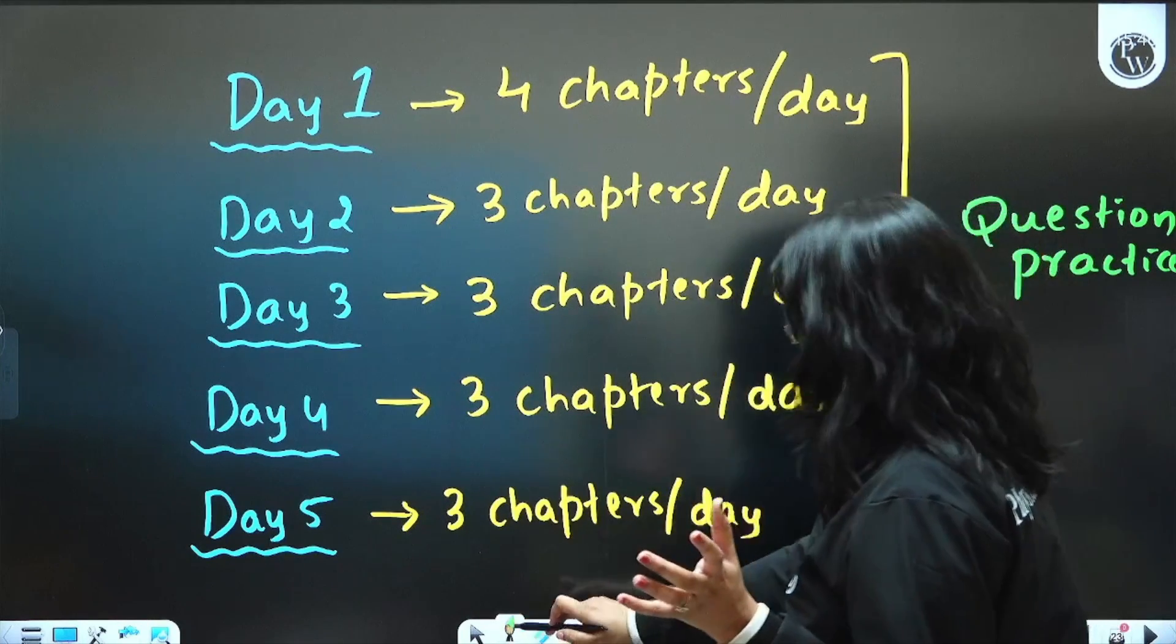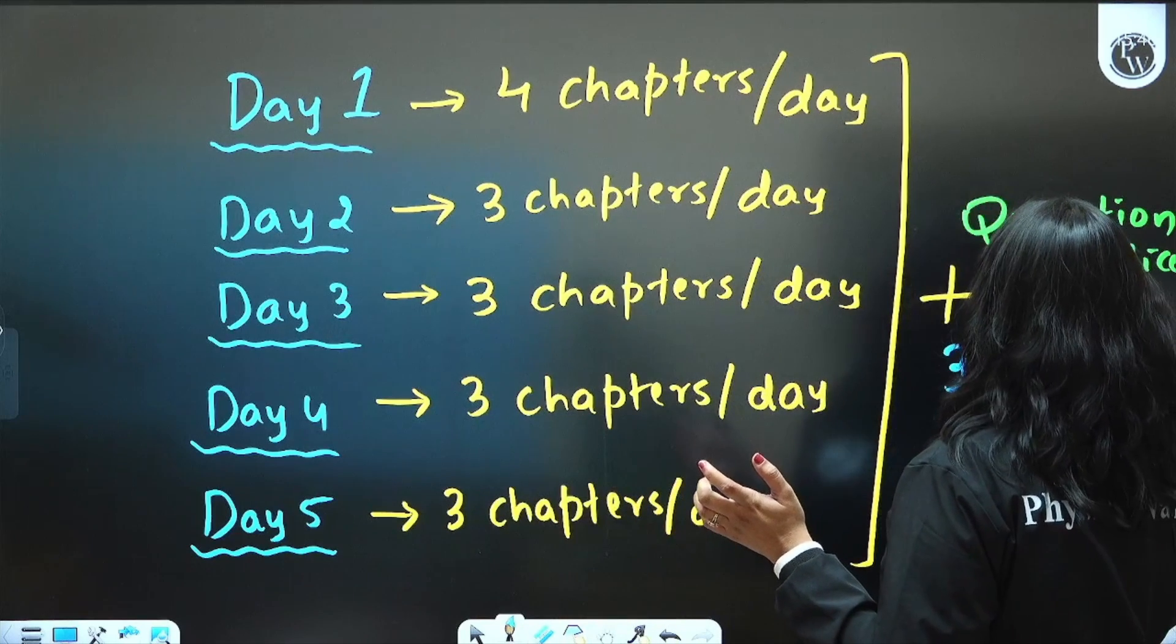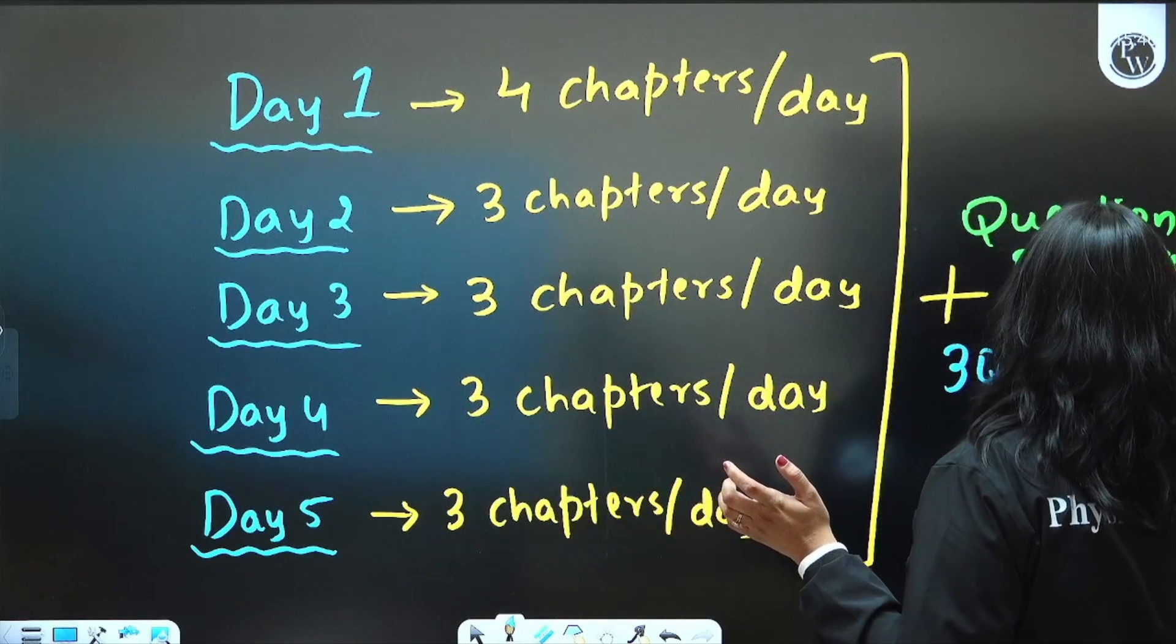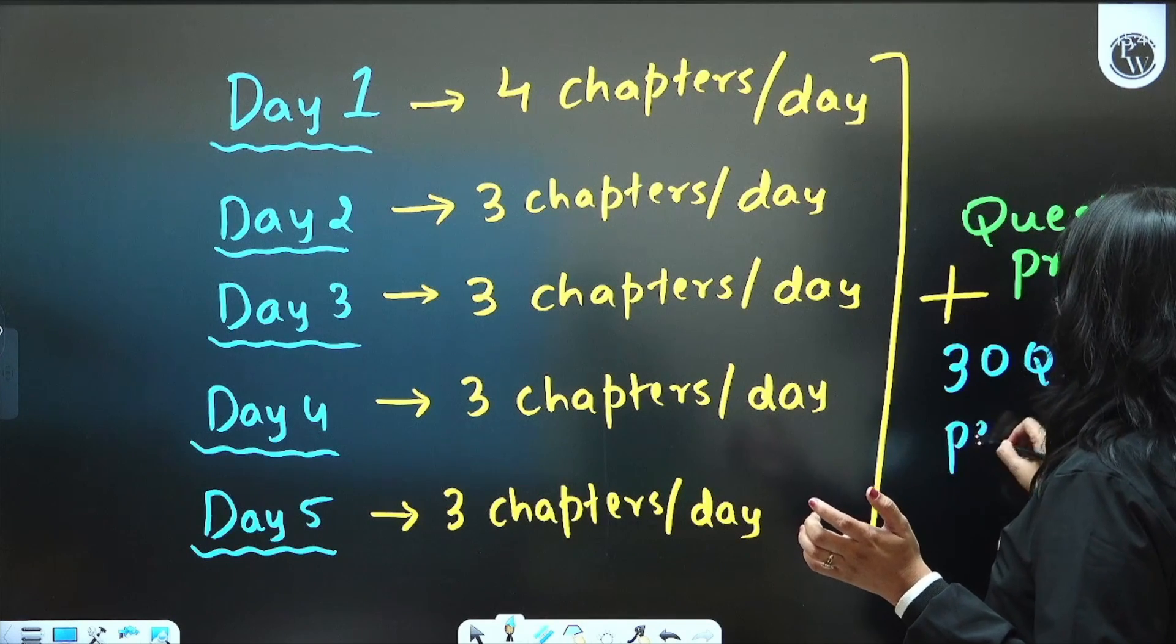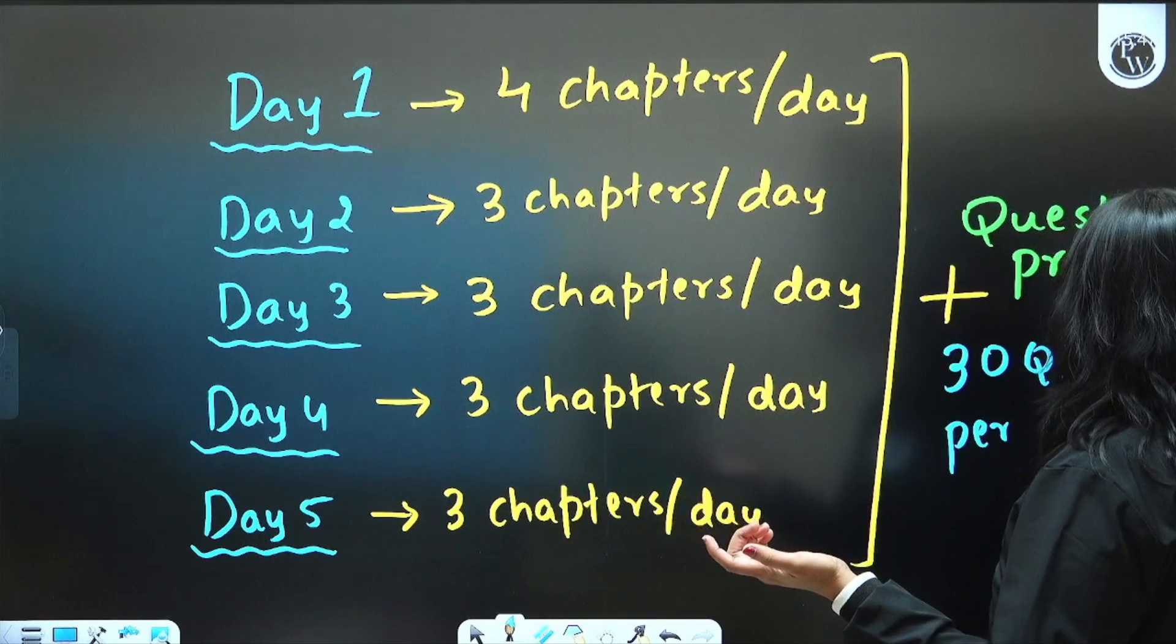If you find 50 is too much, okay, let's reduce to 30 questions—30 questions per chapter, not subject. That's it.